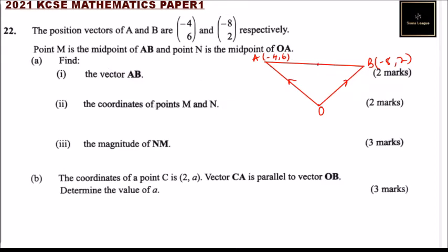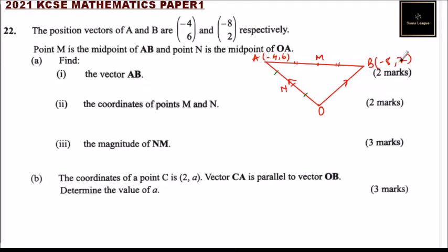N is the midpoint of OA, so N is here. This means this side equals that, and this side equals that — to differentiate the sides. We are told to find vector AB. AB is this vector.